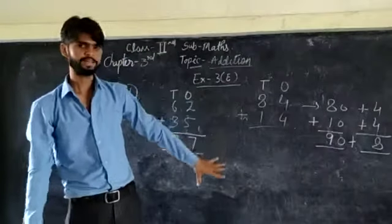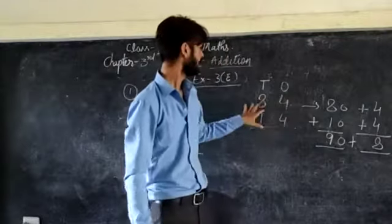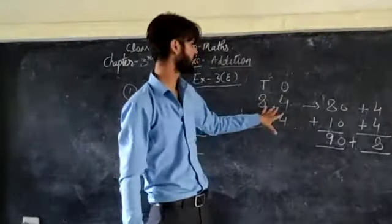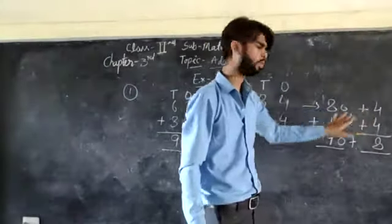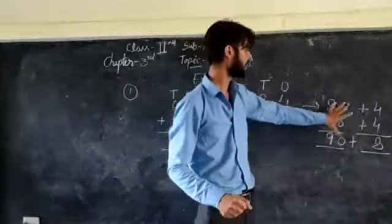So in expanded form we will expand these digits. Like there is 84 and 80 plus 4 is 84 and 40. Then we will add these numbers.